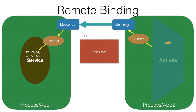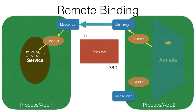Once the service receives a message, it will process that particular message and then it needs to reply back to the requester who had requested for the random number. It needs to know from where the request had come. So in simple terms, we need to set a from address when we are sending the message. For that, we will create another messenger in the application which is requesting for the random number. This messenger will have a reference to a handler.